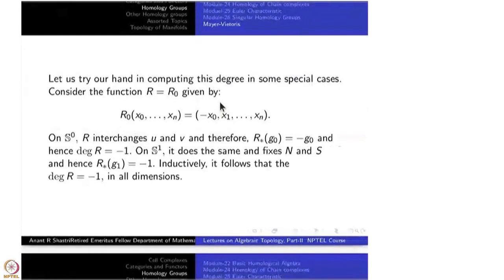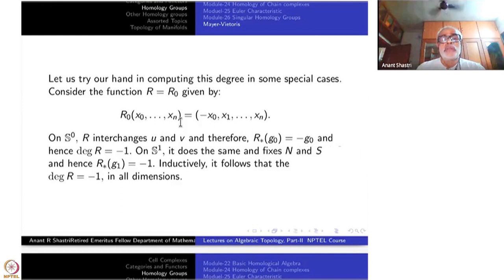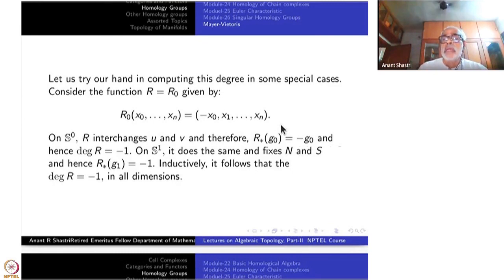Now let us consider reflections — reflections in one of the planes. Take the simplest one: the 0th coordinate x_0 goes to -x_0 and all other coordinates x_1 through x_n remain the same. Only one coordinate changes sign — that is a reflection. On S^0, which is a subset of R, S^0 is just the unit vectors in R, meaning the two points -1 and +1.